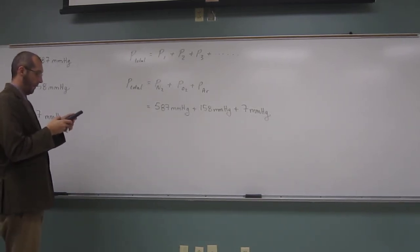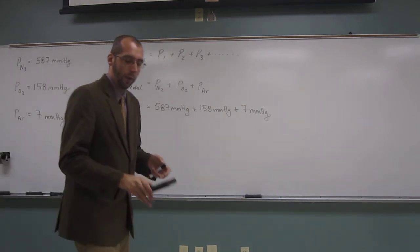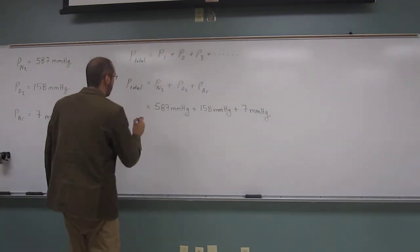So 587 plus 158 plus 7, and I get a total pressure of 752 millimeters of mercury.